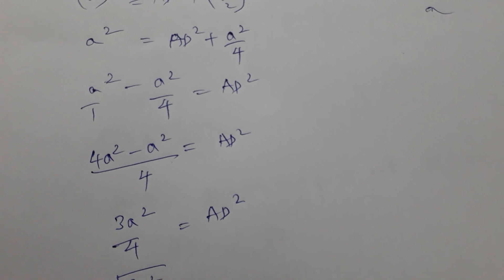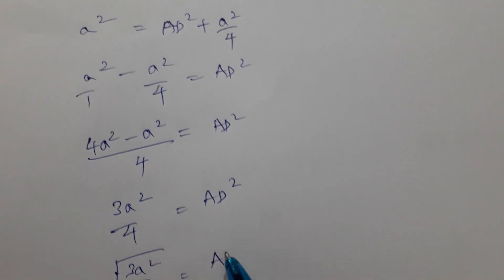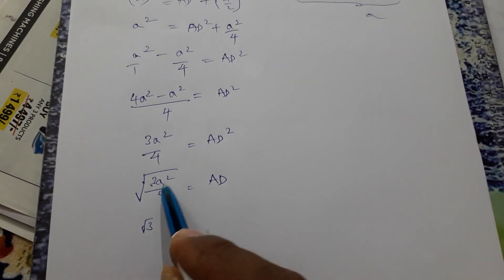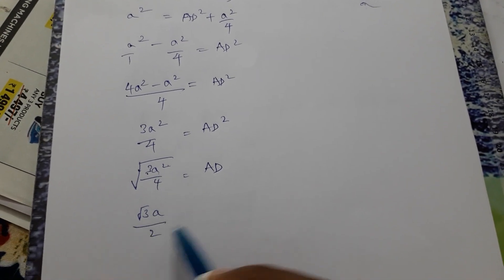So root of 3A squared by 4 is AD. Root 3A squared by 4: root 3 is root 3, root A squared is A, root 4 is 2. So AD equals root 3A by 2.